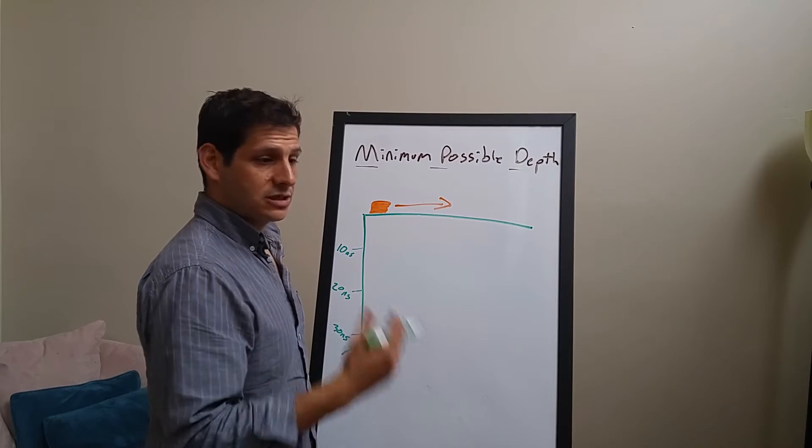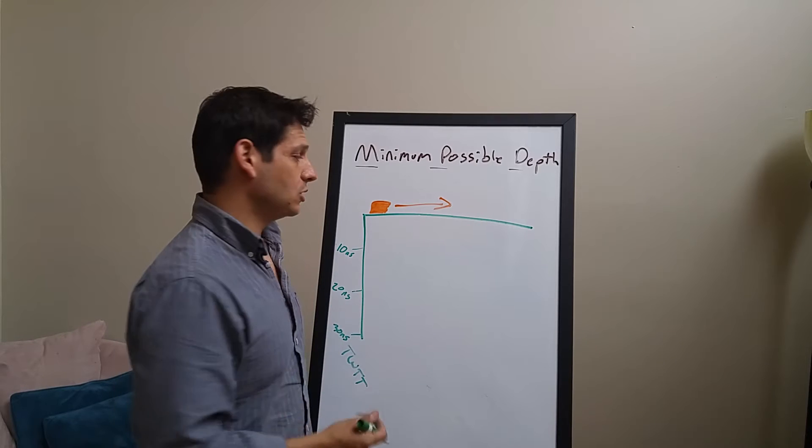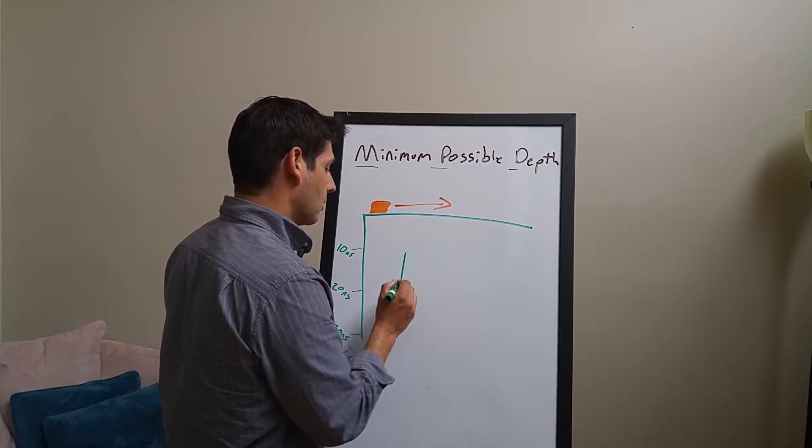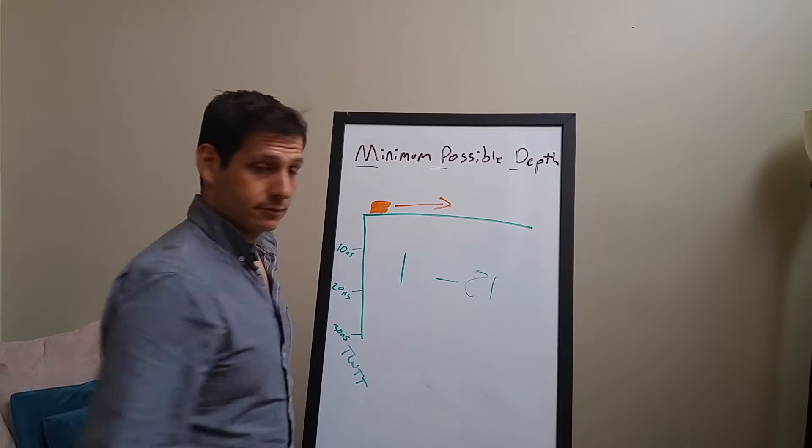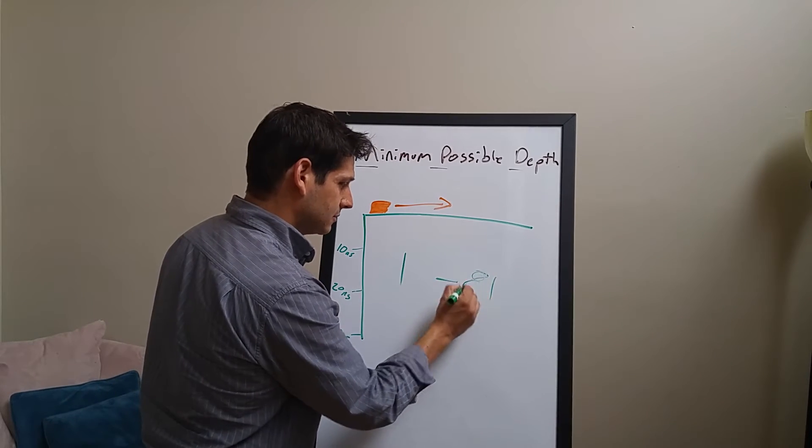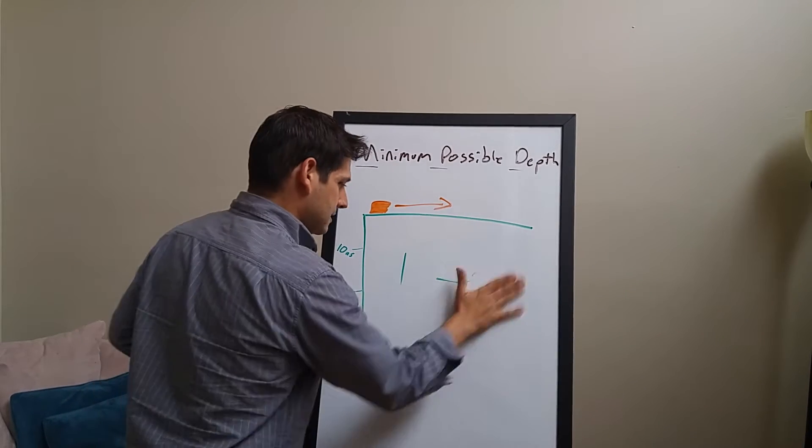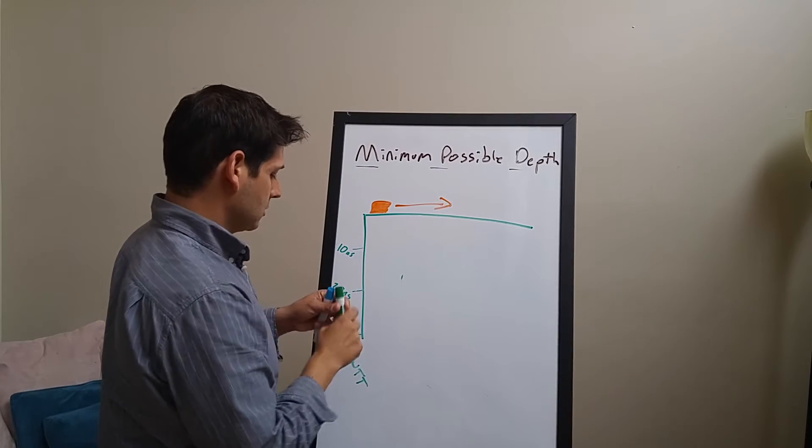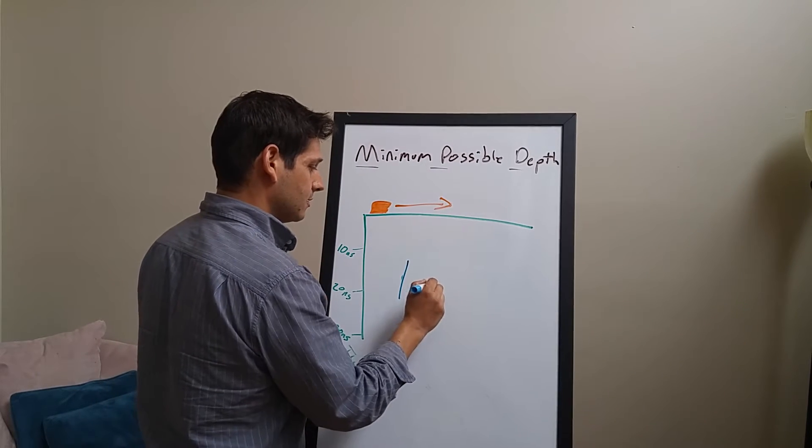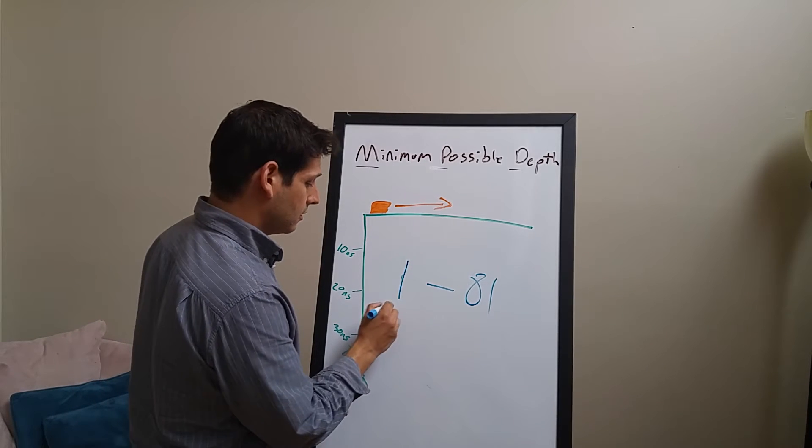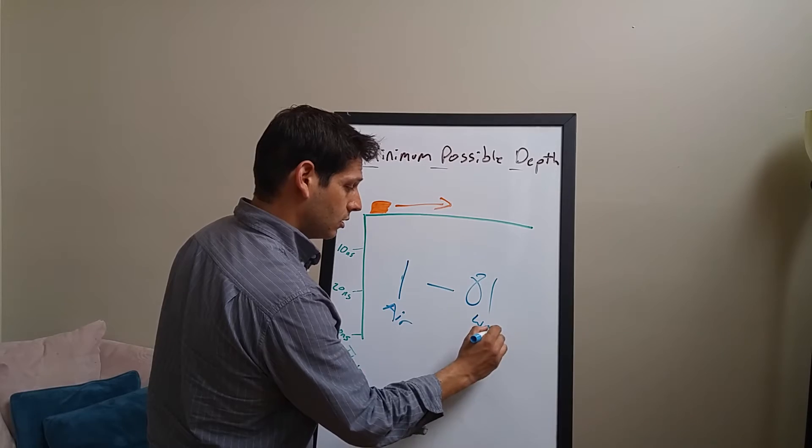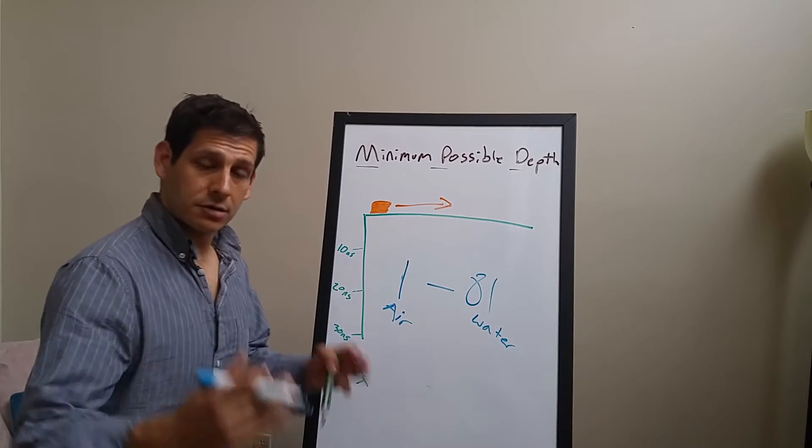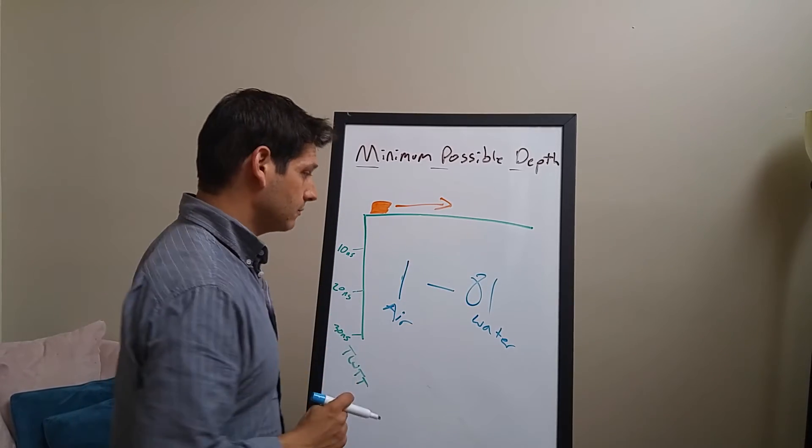So before we get into this minimum possible depth concept, we've got to make sure we're all on the same page. So let's do a little bit of review as far as dielectric properties are concerned and wave velocities are concerned. So dielectric properties in materials that are generally explored with GPR range from about one to 81. Air to water.